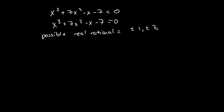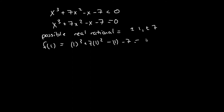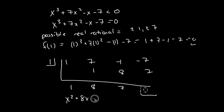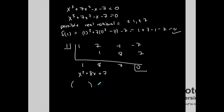I get possible roots of 1 or 7. Plugging in x = 1: 1³ + 7(1²) − 1 − 7 = 1 + 7 − 1 − 7 = 0. So 1 is a root. Using synthetic division — multiply diagonally, add vertically — my remainder is 0, and my other factor is x² + 8x + 7.